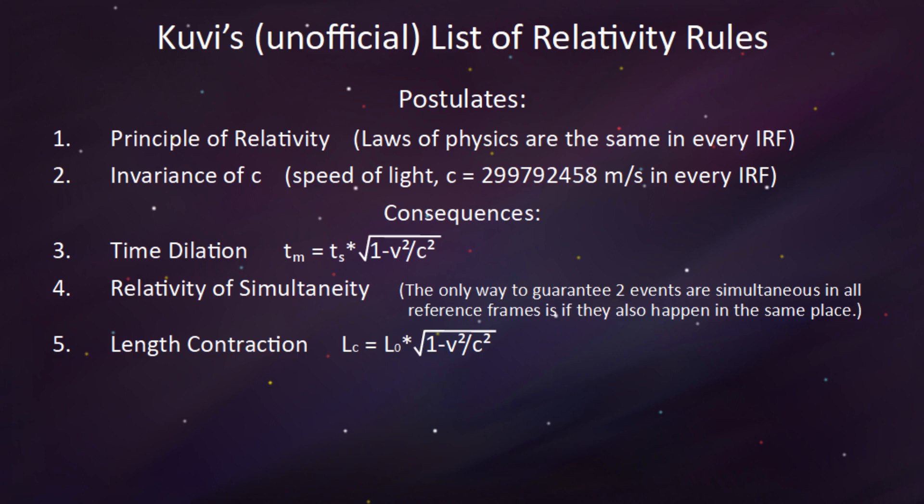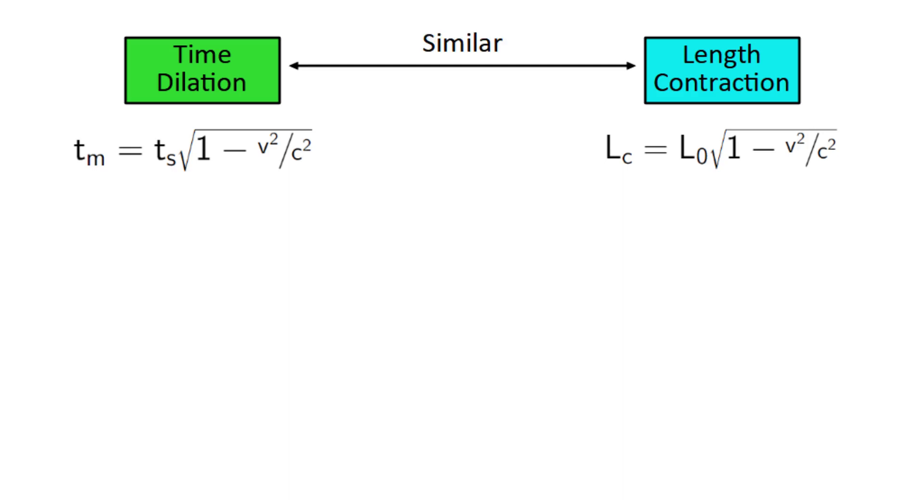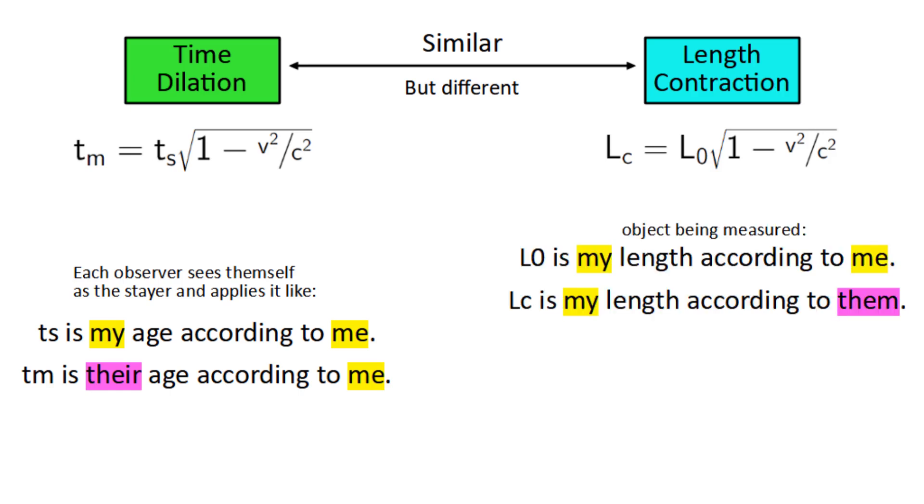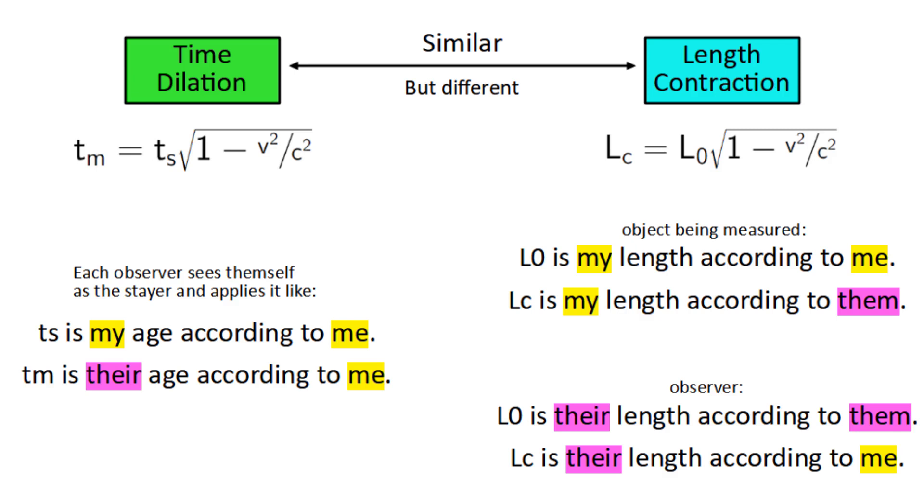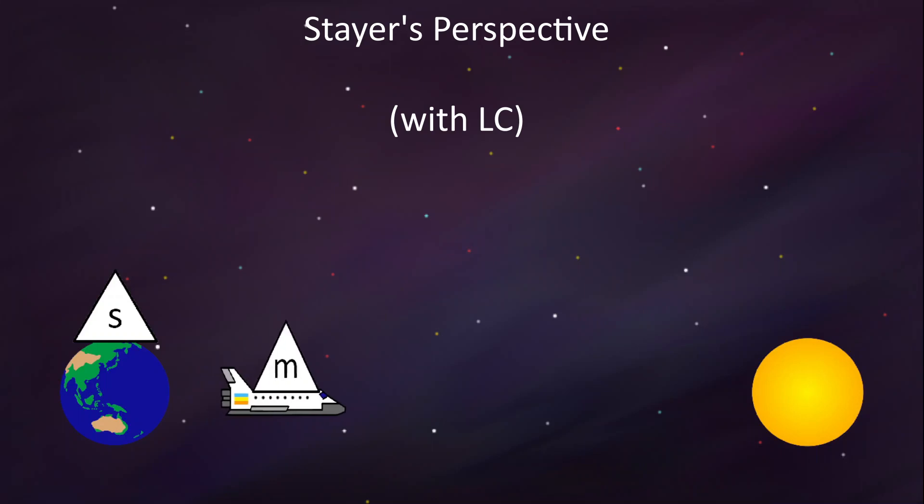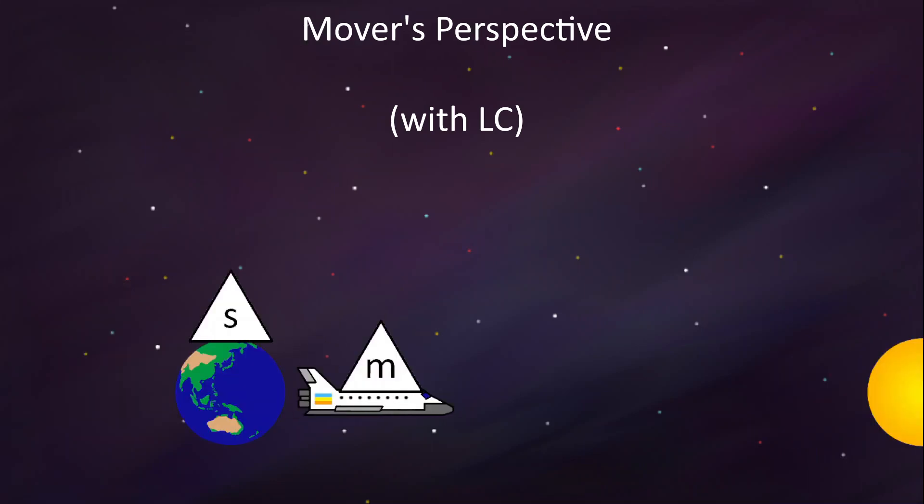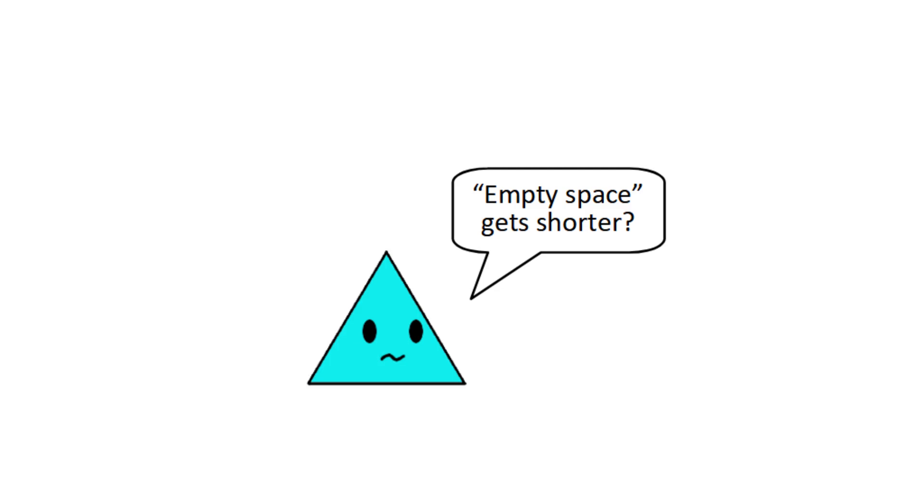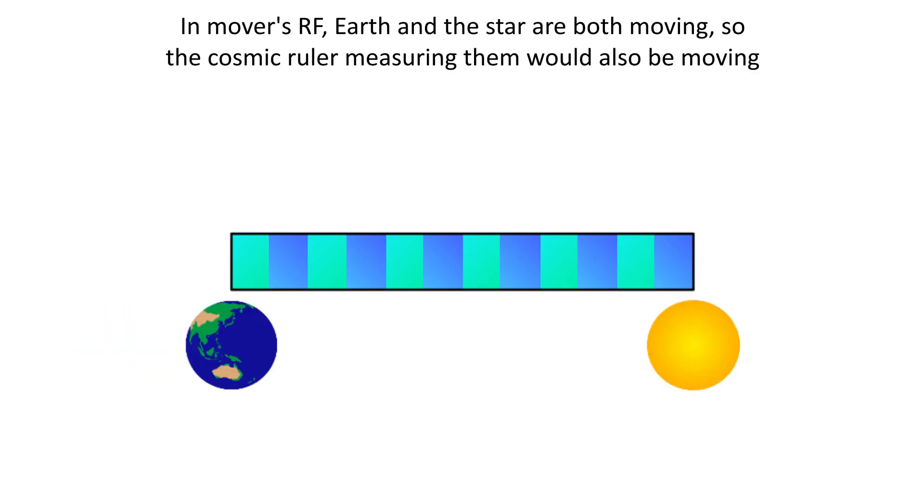The cool thing about this equation is that it shows how length contraction and time dilation are similar, but also have differences. With time dilation, each observer sees themselves as a stair and applies the equation like this. Ts is my age according to me, and Tm is their age according to me. With length contraction, the object being measured applies it like this. L0 is my length according to me, and Lc is my length according to them. And the observer applies it like this. L0 is their length according to them, and Lc is their length according to me. So now when we apply this line of thinking to the situation from earlier, it's clear to see that each observer will see the other one get length contracted. The mover will also see Earth, the star, and the distance from Earth to the star get length contracted. It's kind of weird to say that empty space gets shorter, but I think it's easier if you imagine the cosmic ruler getting shorter and the empty space gets shorter by the same amount.